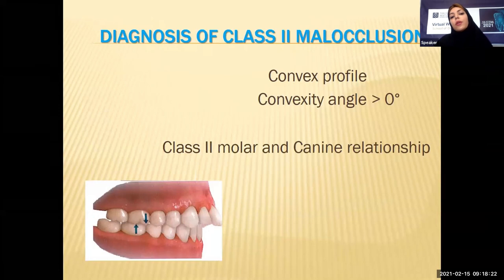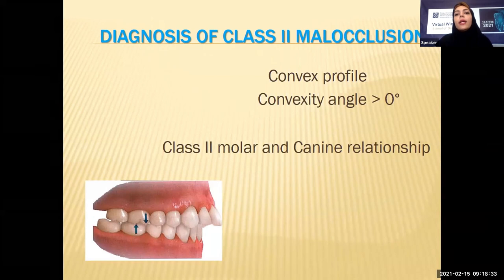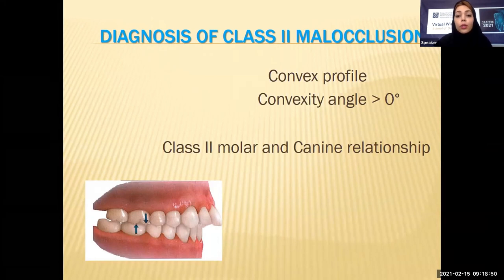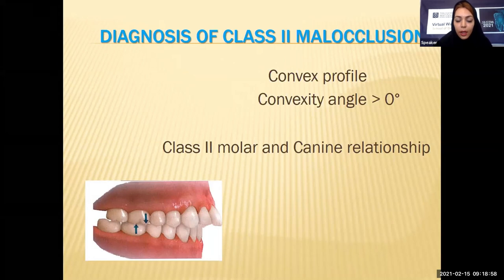Another diagnostic factor is the class 2 molar and canine relationship. When you see a patient has a convex profile, you proceed to intraoral examination and can identify the class 2 relationship. However, please pay attention — in some patients we may have a skeletal class 2, but one side canine or one side molar may not show class 2. Dental and skeletal relationships do not necessarily have to correspond with each other.